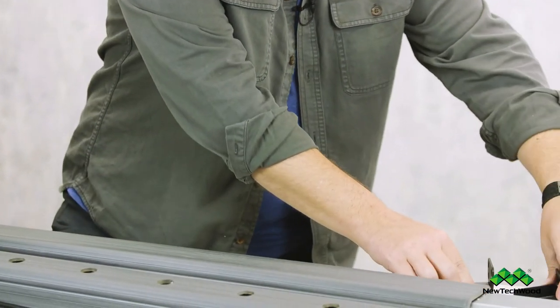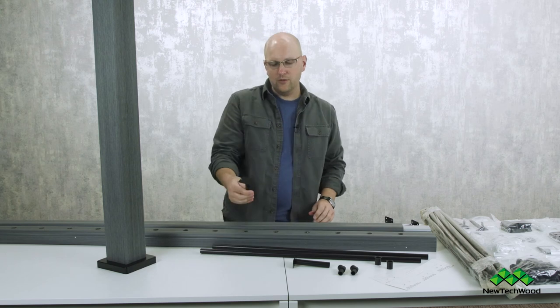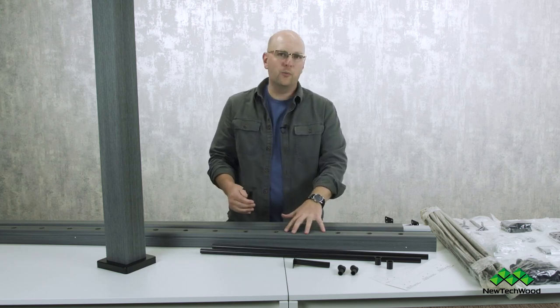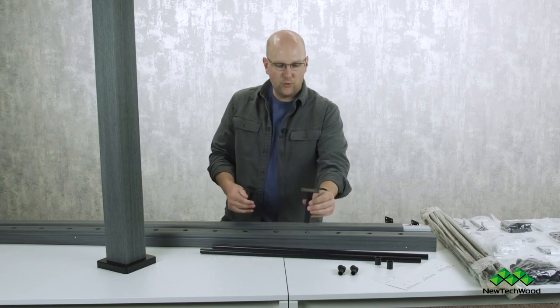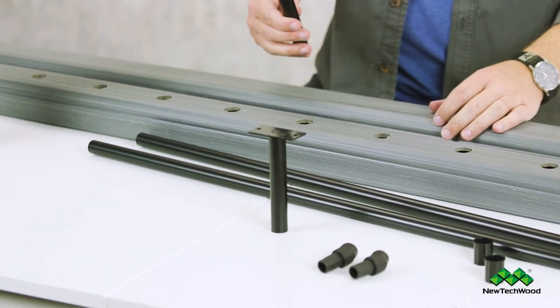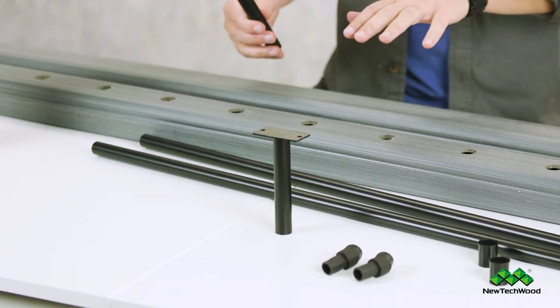The next thing are these foot mounts. Now these are the ones that go underneath your bottom railing. You can see this one mounts so it stays nice and straight and then it gives that perfect support for the surface of your deck.